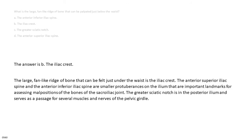The answer is B, the iliac crest. The large, fan-like ridge of bone that can be felt just under the waist is the iliac crest. The anterior superior iliac spine and the anterior inferior iliac spine are smaller protuberances on the ilium that are important landmarks for assessing malpositions of the bones of the sacroiliac joint. The greater sciatic notch is in the posterior ilium and serves as a passage for several muscles and nerves of the pelvic girdle.